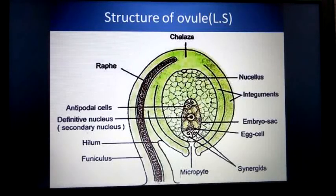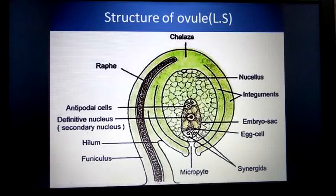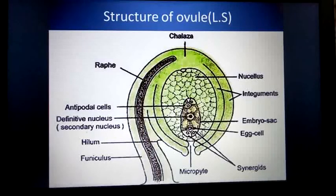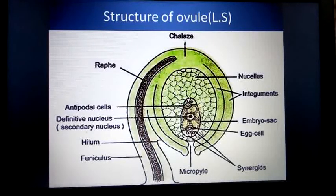There is an opening found here. This opening is known as the micropyle. During fertilization, the pollen tube enters inside the embryo sac through the micropyle. In some plants the pollen tube enters through the integuments.